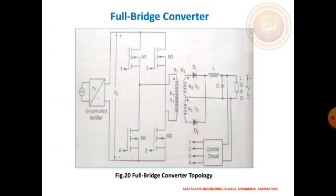Next: full bridge converter topology. Its power output is significantly higher than that of the half bridge topology because the balancing capacitor is replaced with another pair of switches. Two or four power switches can be turned on simultaneously during each conduction cycle, placing the full input voltage across the primary winding, which reduces peak current compared to the half bridge topology. Output power can range from 300 watts to several kilowatts in full bridge topologies.